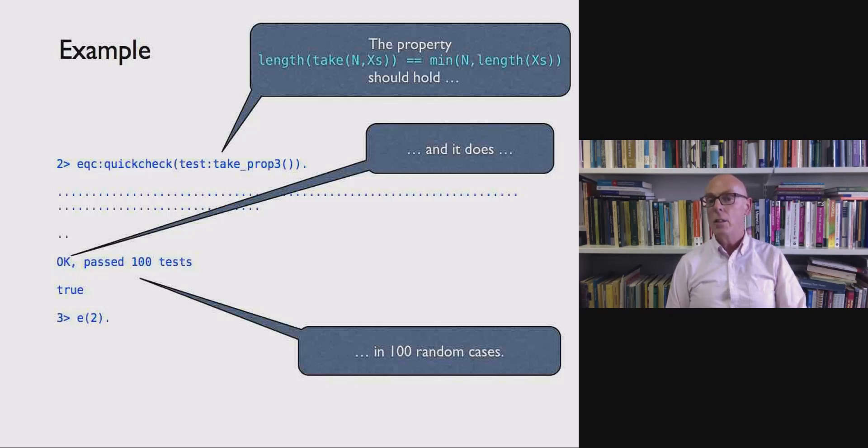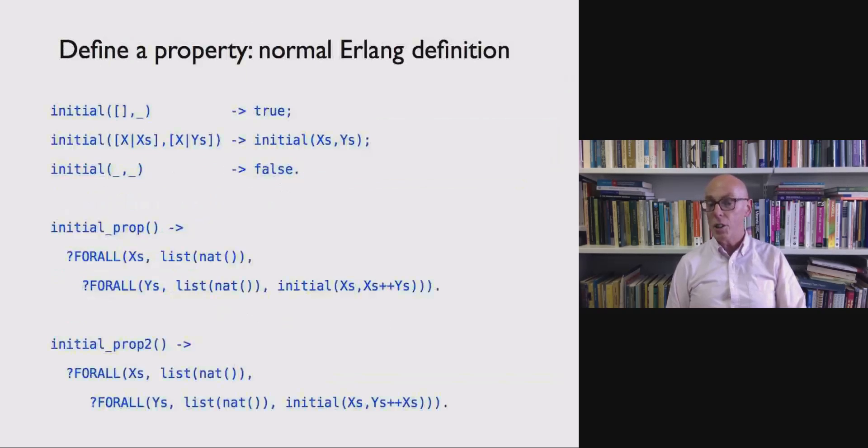You state a property like, and here it relates length and min and take. But it's really a property about take I guess. And allows us to see if that holds in a whole collection of random cases. Now let's just think about how we define some properties.